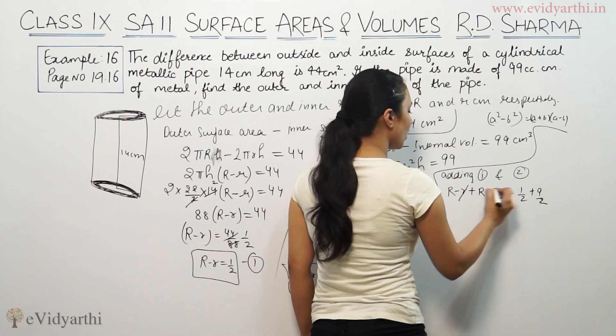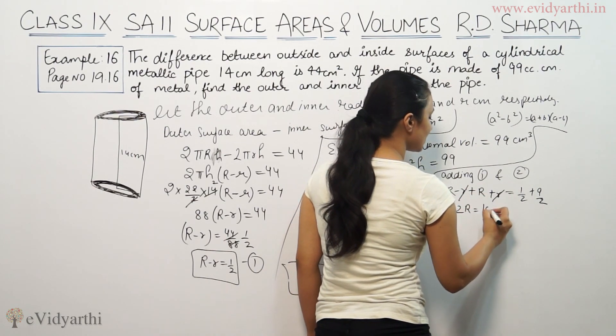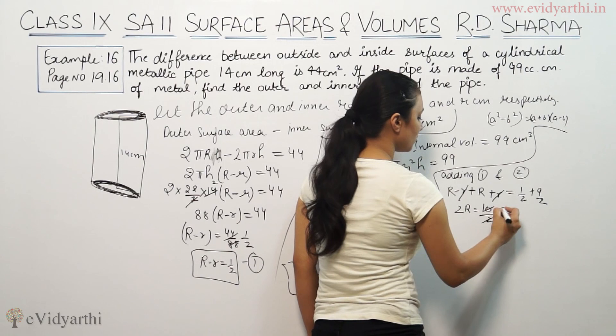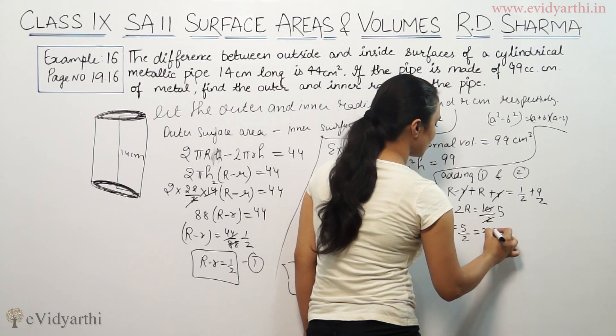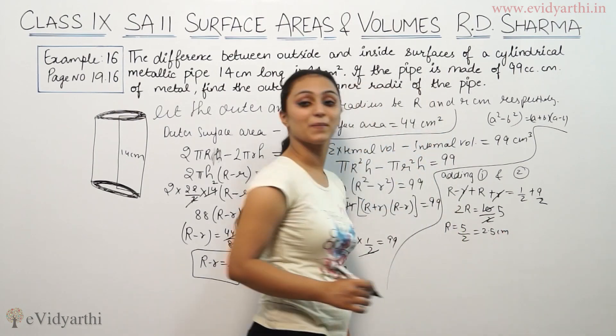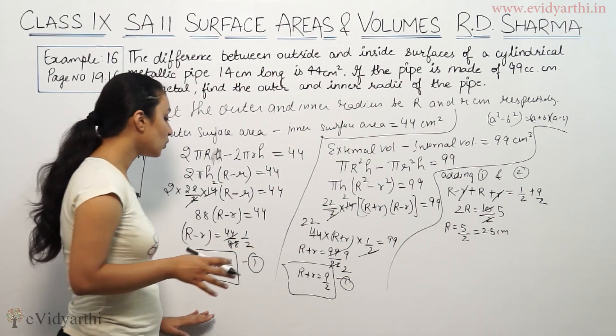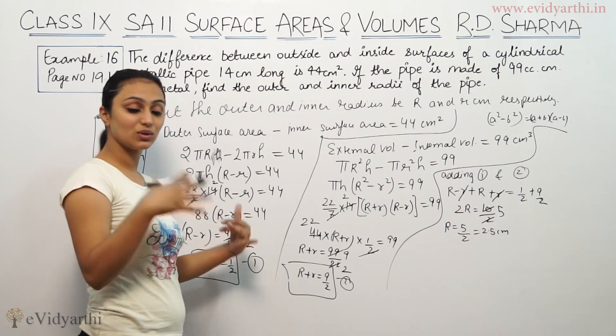Small r cancels, so 2R = 10/2 = 5. So R = 5/2, which is 2.5 cm.